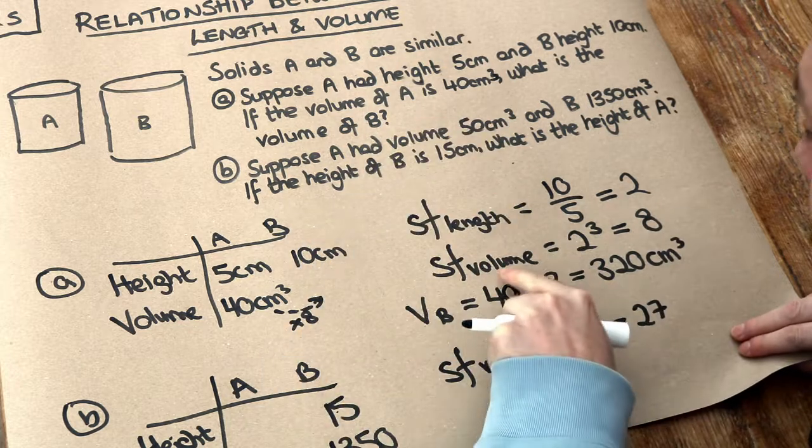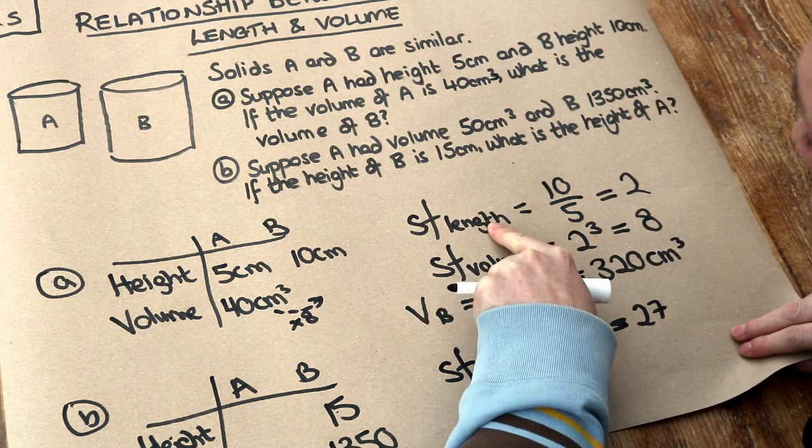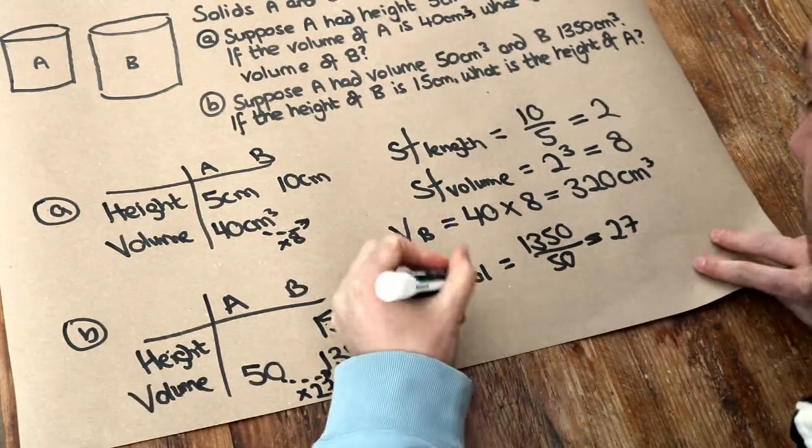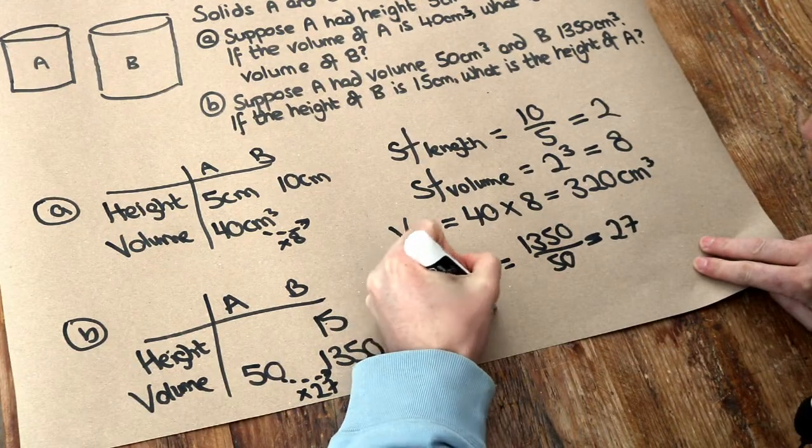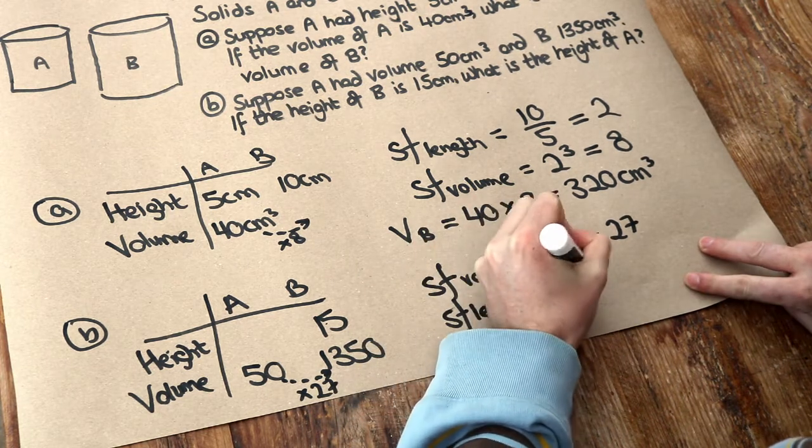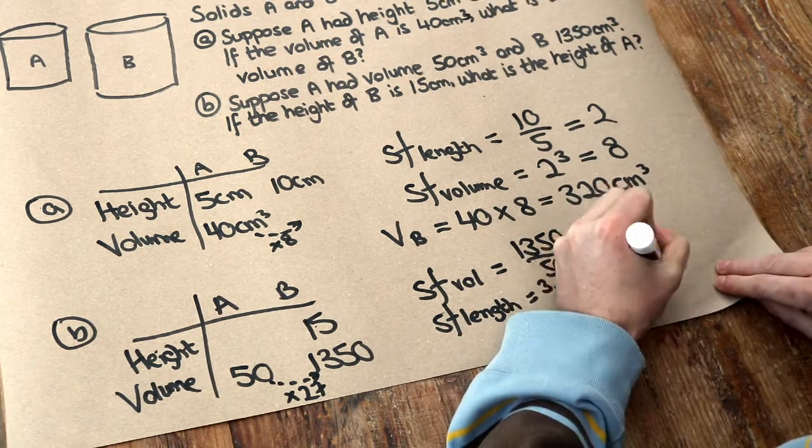So therefore, doing the reverse, if we had the scale factor of volume and we wanted to find the scale factor of length, we cube root that scale factor of volume. So we can find the scale factor of length, for example, height, by cube rooting that 27, and the cube root of 27 is 3.